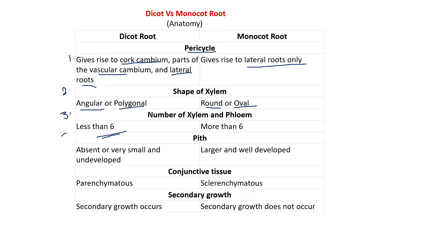The fourth difference is in the pith. Pith is less developed or very small and underdeveloped in the case of dicot root, while it is large and well-developed in the case of monocot root. This is the fourth difference.